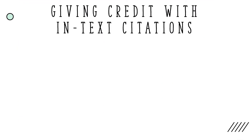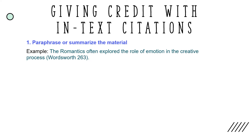There are several ways to give credit to your sources using in-text citations within your paper. First, you can paraphrase or summarize the material. In this case, you will need to include both the author's name and the page number in your in-text citation. For example: "the romantics often explore the role of emotion in the creative process." Here, the source material is paraphrased and the author and page number are included in the in-text citation.